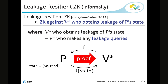I pose a notion of leakage resilient zero knowledge, which is a notion of zero knowledge against verifiers who obtain the leakage of the previous secret state. Leakage resilient zero knowledge is defined by considering verifiers who make any leakage query during the protocol. The verifier can query any function at any time, and after the query, the function is evaluated immediately on the current state. The output is returned to the verifier, and the verifier can query any number of queries adaptively.